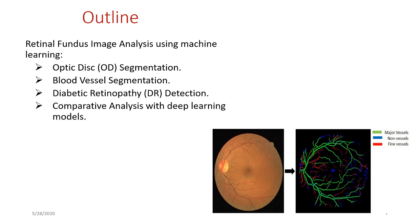I'll be looking at existing methods such as optic disc segmentation, blood vessel segmentation, diabetic retinopathy classification, and comparison with deep learning models. These are some of the papers I will be reviewing next week for the literature survey. As an example, the goal in blood vessel segmentation is to classify major (thicker) blood vessels from thinner ones and identify as much actual blood vessel as possible.